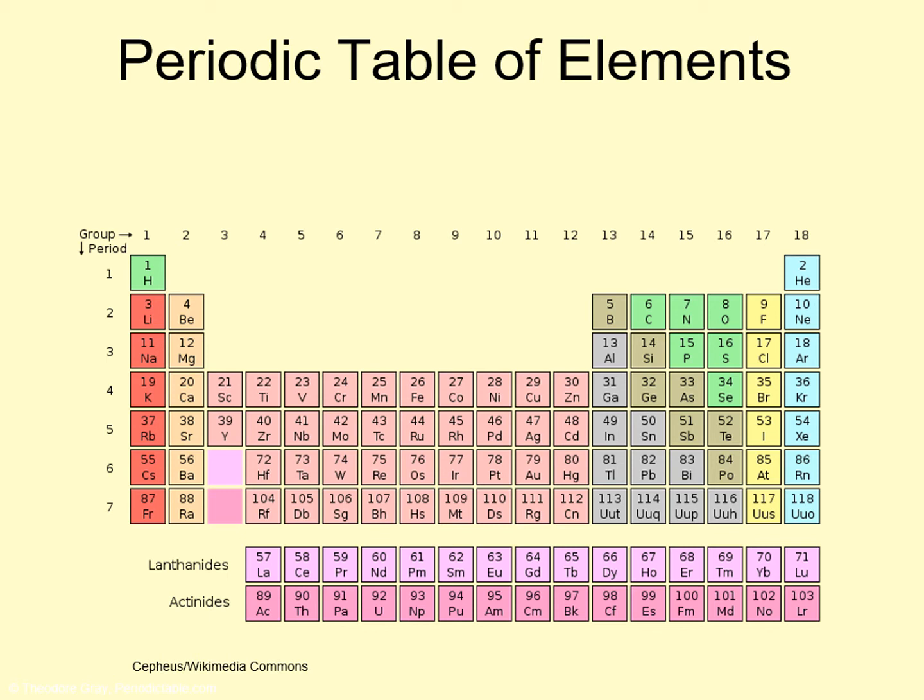For example, if you look at the column on the far right, all of the elements you see there — like helium, neon, and argon — are noble gases that don't like to combine with other elements. This table and the properties of the elements in it are very central to chemistry. In this class, however, I'd like us to focus on just two important observations.